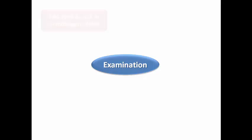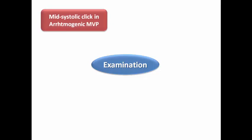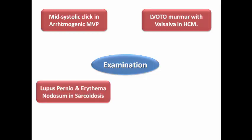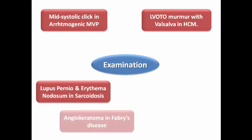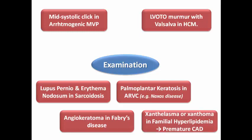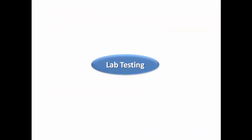We perform a targeted cardiac clinical examination with specific clues toward a cause: mid-systolic click on auscultation in arrhythmogenic mitral valve prolapse; LVOT obstruction murmur with Valsalva in hypertrophic cardiomyopathy; lupus pernio and erythema nodosum as dermatological features of sarcoidosis; angiokeratoma in Fabry's disease causing hypertrophic cardiomyopathy; palmoplantar keratosis in some ARVC patients like Naxos disease; and xanthelasma or xanthoma in familial hyperlipidemia leading to premature coronary artery disease.